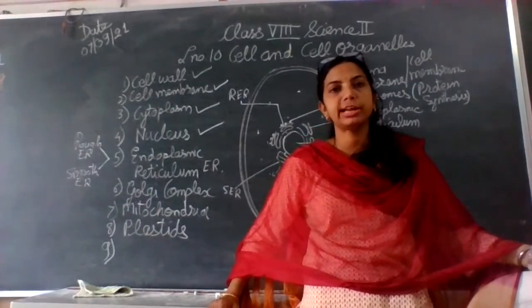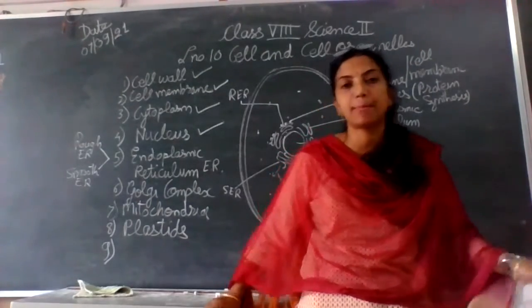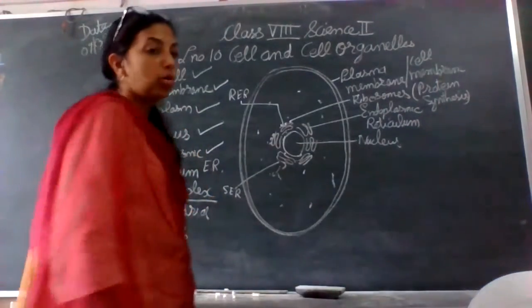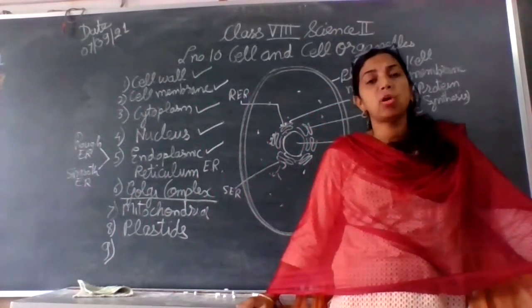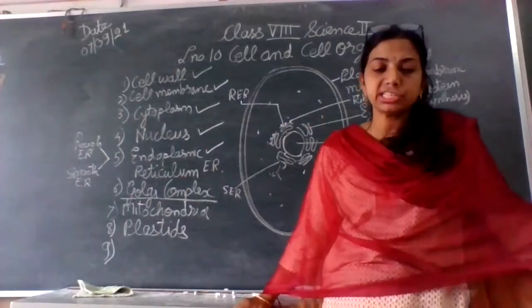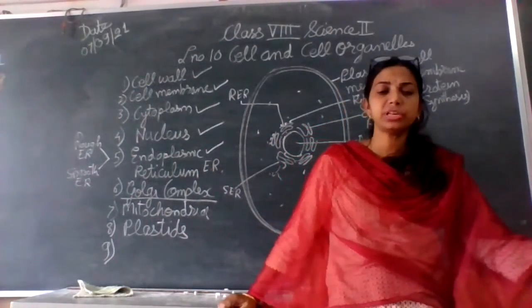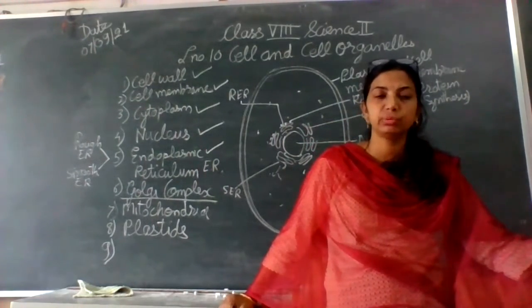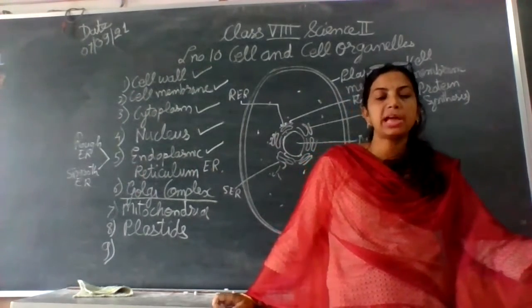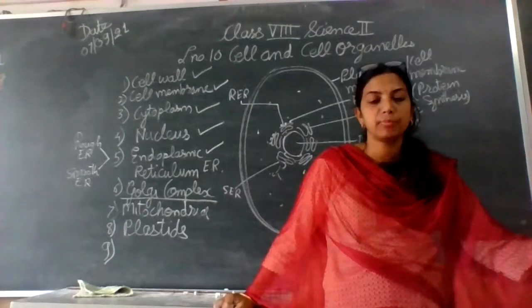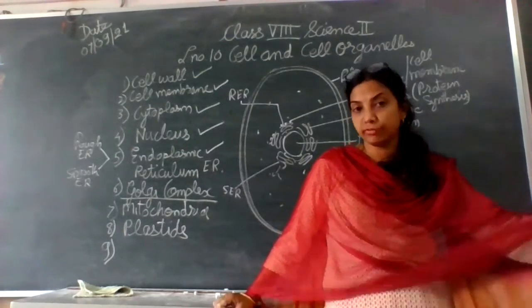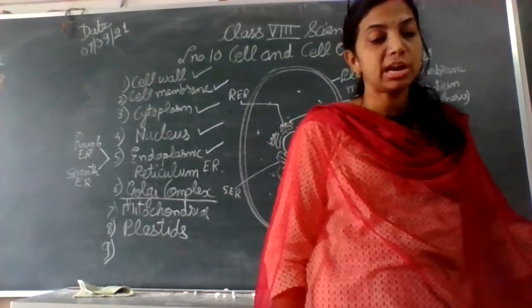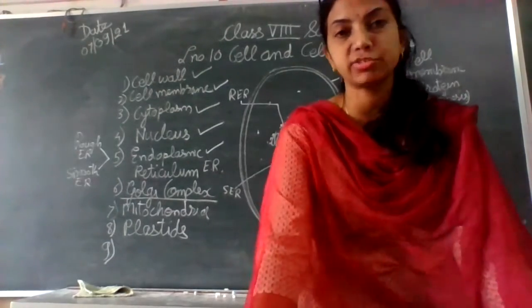The next cell organelle we are going to cover is Golgi apparatus, or the Golgi complex. Why is it named Golgi complex? It was invented by a scientist named Camillo Golgi. He described this structure for the first time and his name was given to this cell organelle. He won the Nobel Prize in 1906 along with other scientists for the study of the structure of the nervous system. Camillo Golgi was the main person who described the Golgi complex.